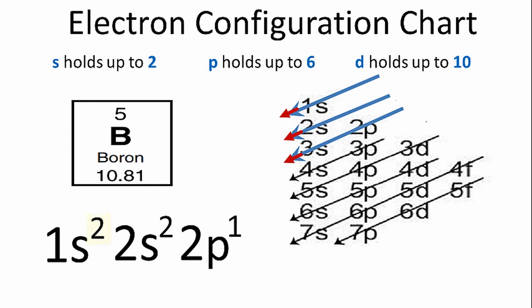And those numbers, if you add them up, 2 plus 2 plus 1, that gives us 5, which is the number above the element symbol for boron on the periodic table. So that's the electron configuration for boron.